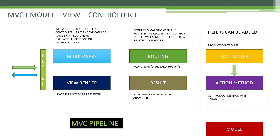This is how the MVC pipeline works. Around the controller we also have filters, so we can add filters and touch the request just before the controller, after routing. When the request arrives here, if we add a filter, we can intercept it just before it reaches the controller and manipulate it. For example, if we send a five ID to the controller, we catch this number just before the controller and check whether the data is valid or not.